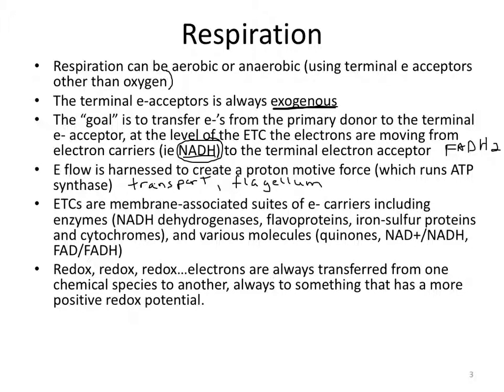Electron transport chains are membrane-associated suites of electron carriers, including enzymes and various molecules. This is all about redox: electrons are always transferred in an electron transport chain from one chemical species to another that has a more positive redox potential.